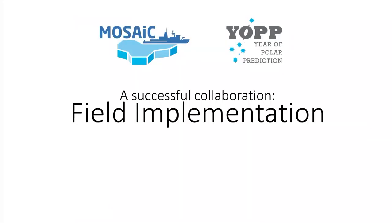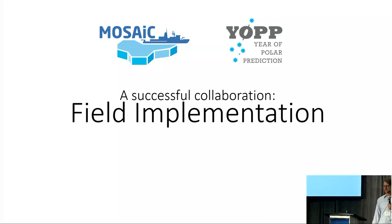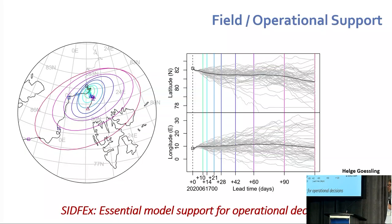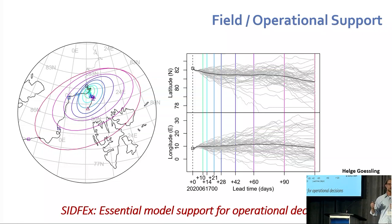Another successful collaboration was in the implementation out in the field. The first example is SIDFEX — sea ice drift forecasting — which was really important for us in the field to understand where we might be going and how to plan our efforts, especially as we started to get near the ice edge. We'll hear all about that in the next presentation.